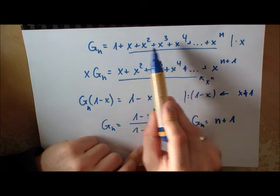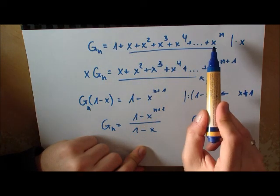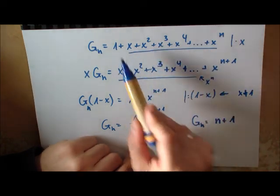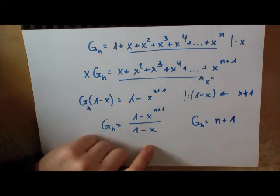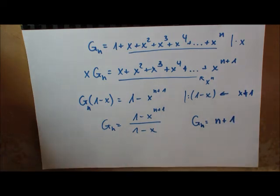It's just looking like 1 plus 1 plus 1. If you look at this, we have 1, 1, 1. So if you would have X equals 1, then we would have n times 1, and then we have n plus 1. So this is what we evaluated.